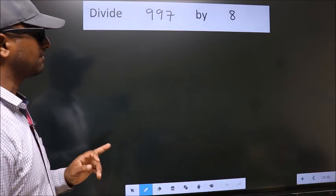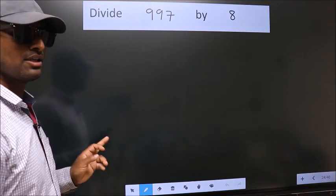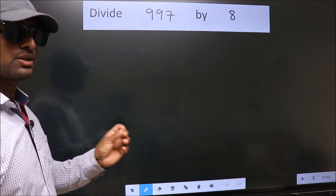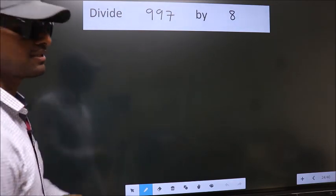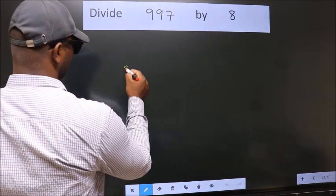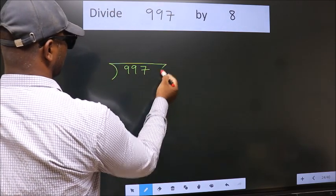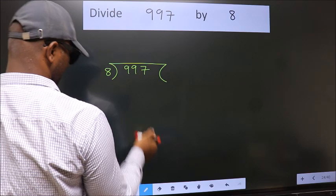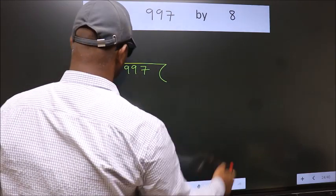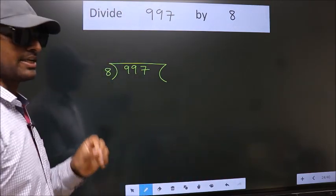Divide 997 by 8. To do this division, we should frame it in this way: 997 here, 8 here. This is your step 1.